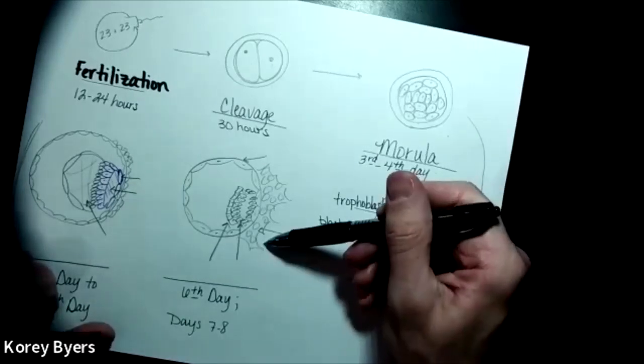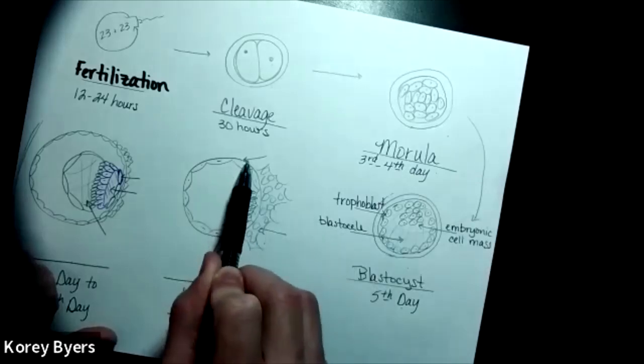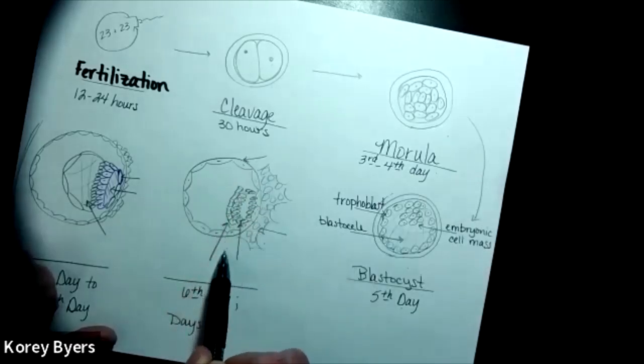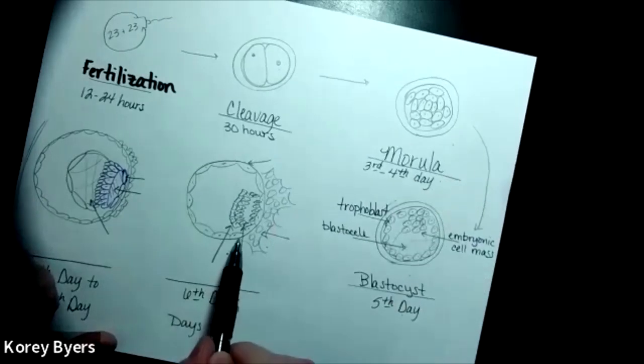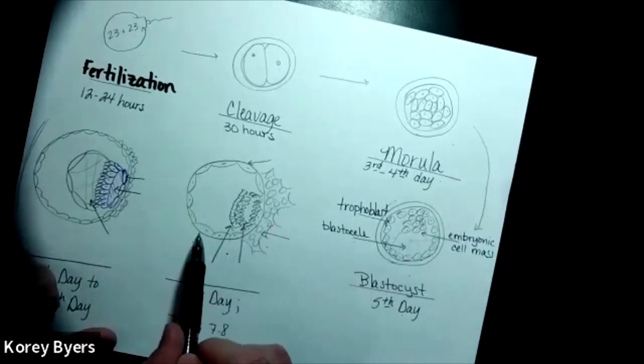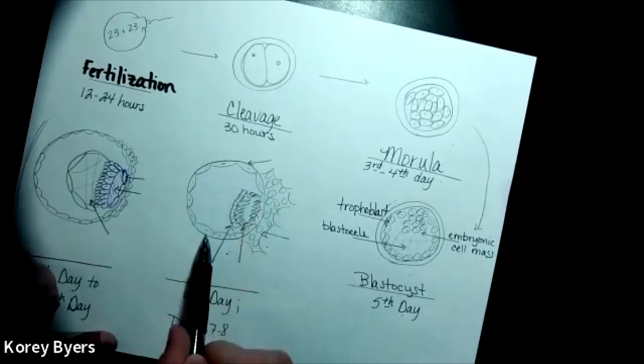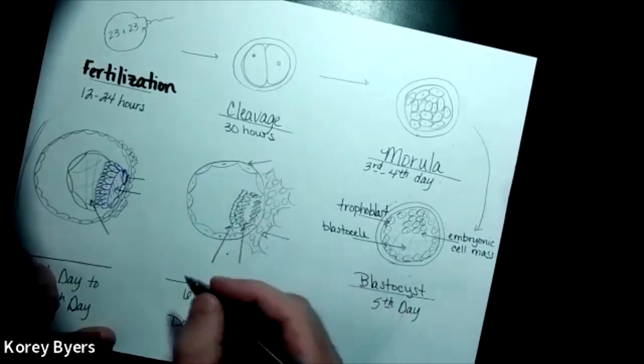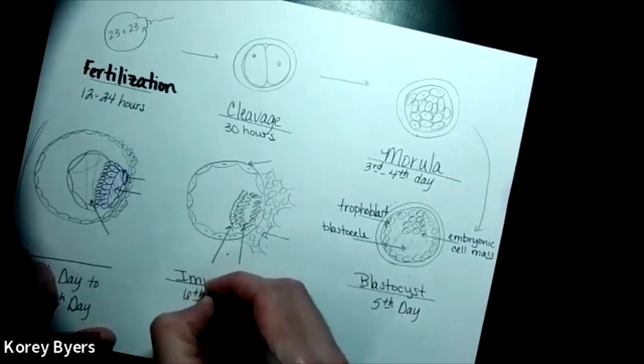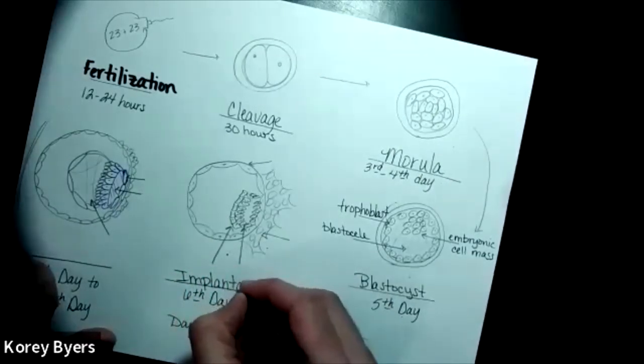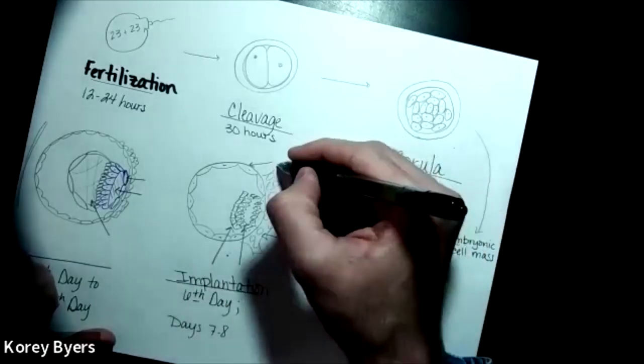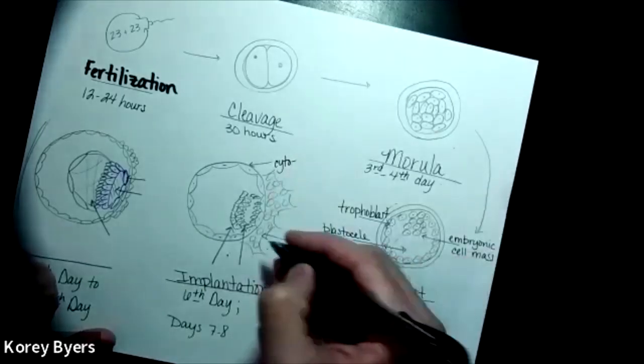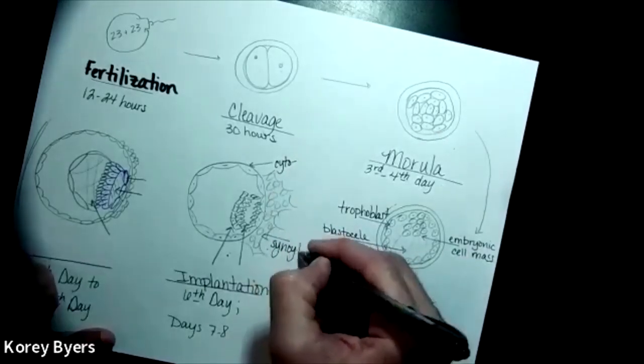The fifth to sixth day is about when you would see this structure either implant or touch the uterine lining if it's going to do so. Here, if you're following along in Tortora or following along in the PowerPoint, you would see that trophoblast continues to divide. At this point, let's just call this implantation. At this point of implantation, your trophoblast is going to form two distinct layers, a cytotrophoblast and then what we call a syncytial trophoblast.